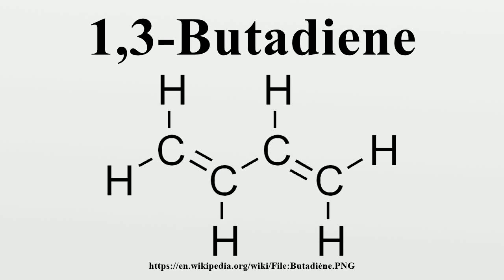1,3-butadiene is a simple conjugated diene with the formula C4H6. It is an important industrial chemical used as a monomer in the production of synthetic rubber. The word butadiene usually refers to 1,3-butadiene which has the structure H2C=CH-CH=CH2. Although butadiene breaks down quickly in the atmosphere, it is nevertheless found in ambient air in urban and suburban areas as a consequence of its constant emission from motor vehicles.